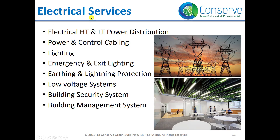There are a number of services under electrical services, which include HT and LT power distribution — HT and LT being abbreviations of high tension and low tension, meaning high voltage and low voltage — power and control cabling, lighting, emergency and exit lighting, earthing and lightning protection systems, low voltage systems, building security systems, and building management systems. We will discuss all these services in detail in later chapters.